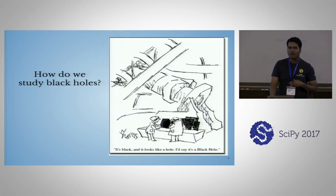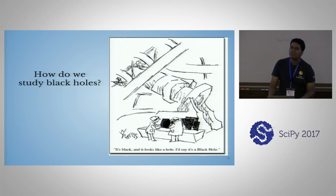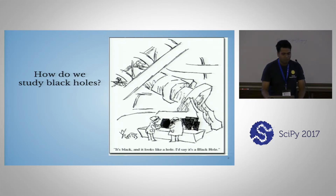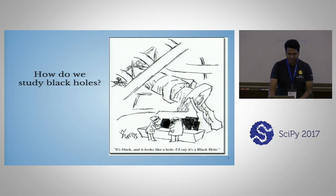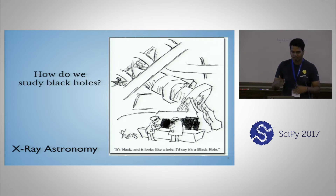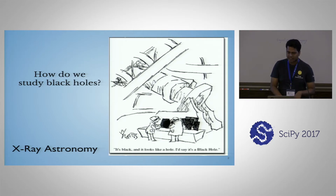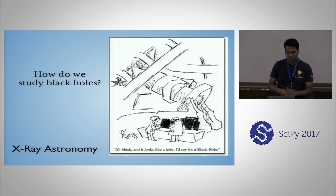So I studied maths and computing back at college, and so if someone would ask me how do we study black holes, I would say we can take images and see — it's black and it looks like a hole, so it should be a black hole. But then someone would say no, that's not the way to do it. So there's something called X-ray astronomy, where we observe and detect X-rays from astronomical objects. The X-rays are absorbed in the Earth's atmosphere, so we release balloons and everything to detect those X-rays from those objects.